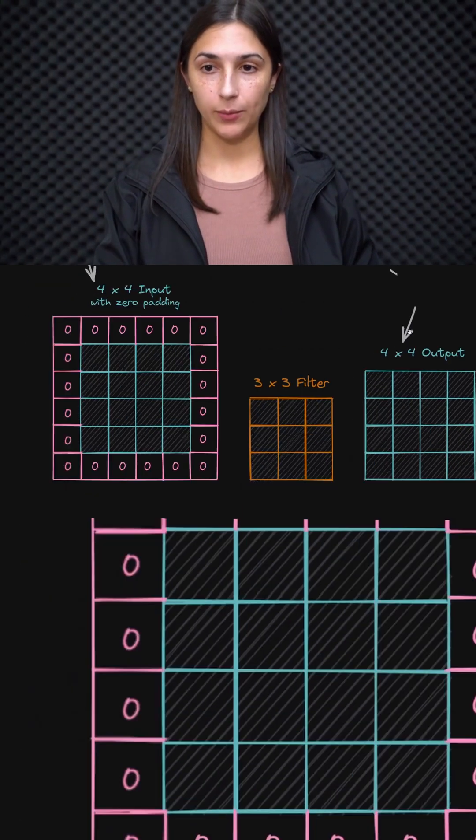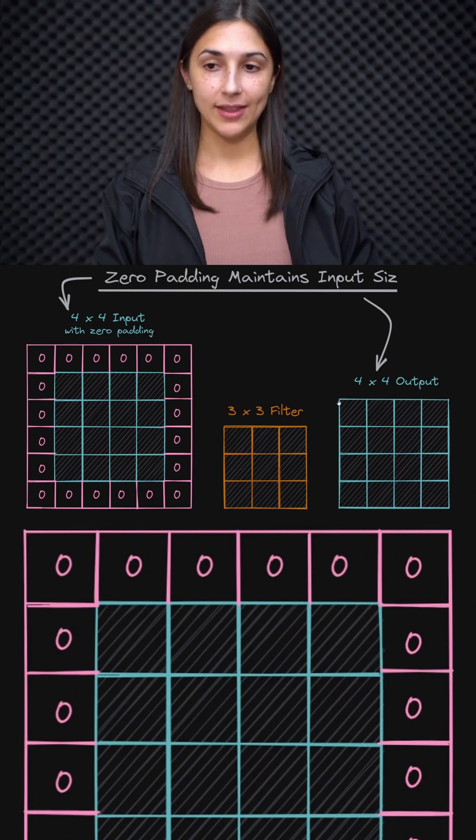Now if we look at the resulting output when we have zero padding, we can see that we have the same resulting 4x4 from our input here since we made use of zero padding when we convolved it with this 3x3 filter.